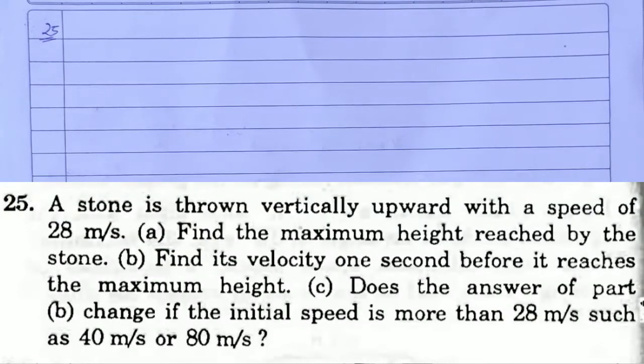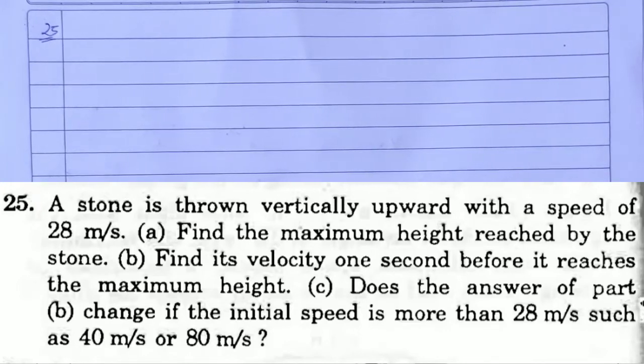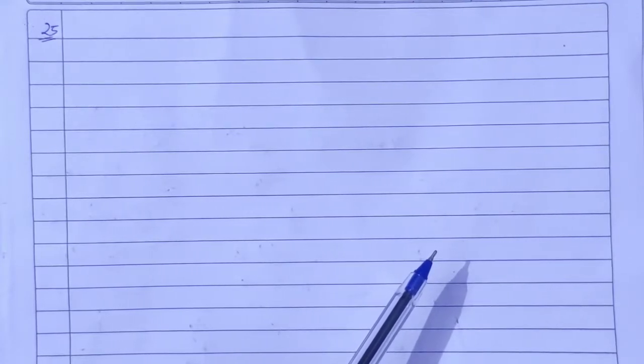HC Verma solution, Chapter 3: Rest and Motion Kinematics, Question number 25. A stone is thrown vertically upward with a speed of 28 meter per second. (a) Find the maximum height reached by the stone. (b) Find the velocity one second before it reaches the maximum height. (c) Does the answer of part b change if the initial speed is more than 28, such as 40 meter per second or 80 meter per second?